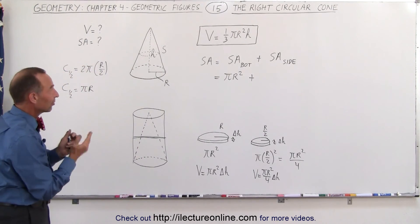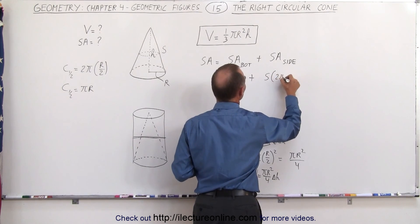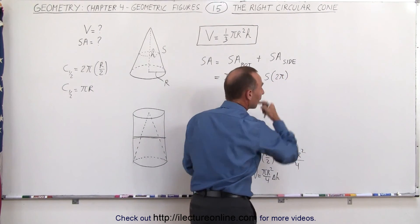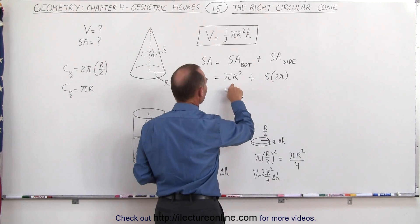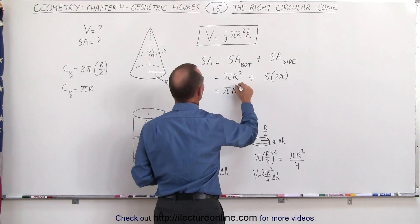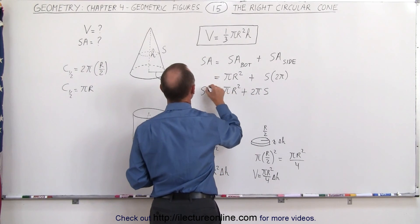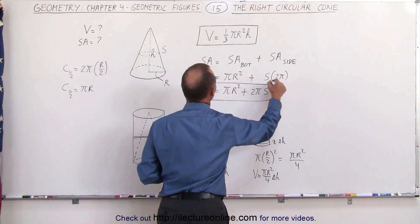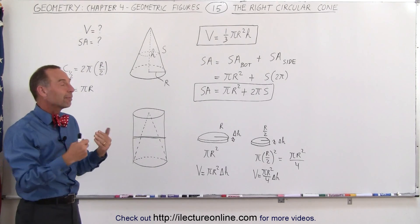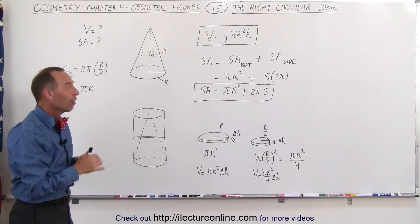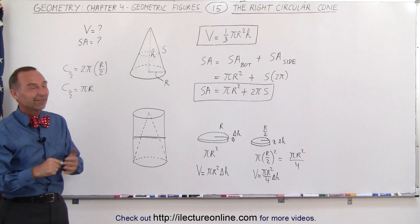So the surface area of the side equals the slant height multiplied by the average distance covered as you swing it around, which is pi R times the slant side S. Adding the bottom gives us pi R squared plus pi R times S. That is the surface area of the right circular cone, and one-third pi R squared H is the volume. Without using more advanced mathematics, we got a pretty good sense of why these are the correct equations for the volume and surface area of the right circular cone.